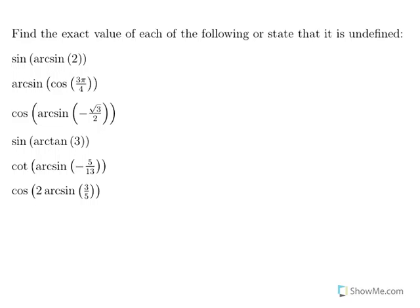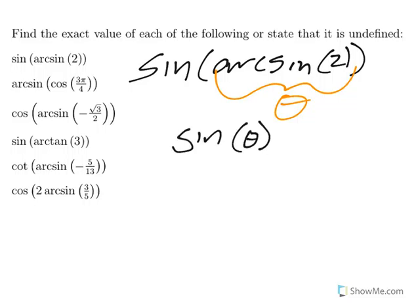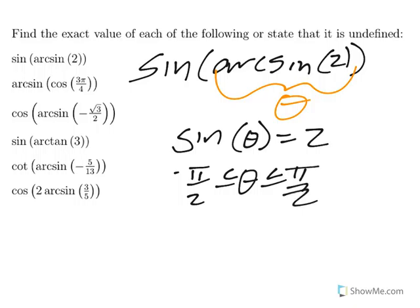The first one can go pretty quickly. We have sine of arcsine of 2. Starting with the inside, arcsine of 2 is the angle whose sine comes out to 2, and the angle is between negative pi halves and pi halves. But wait — an angle whose sine is 2? Sine is at most 1.